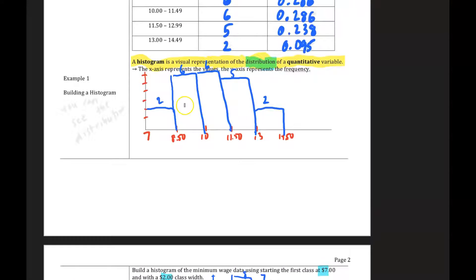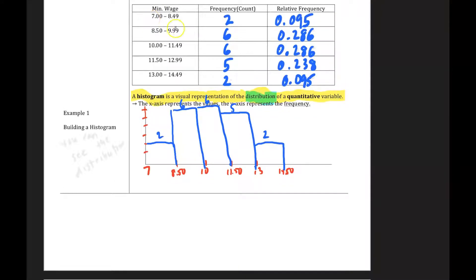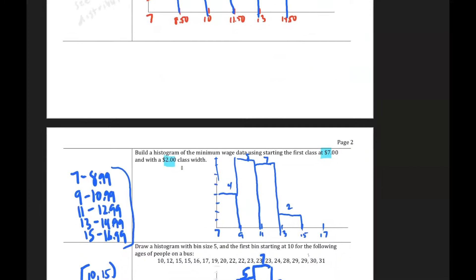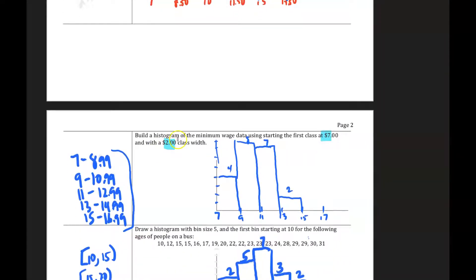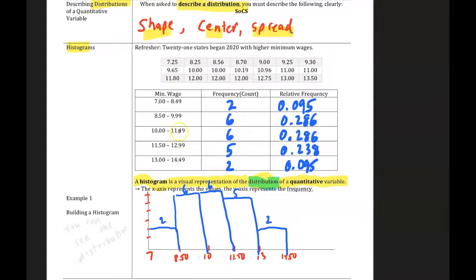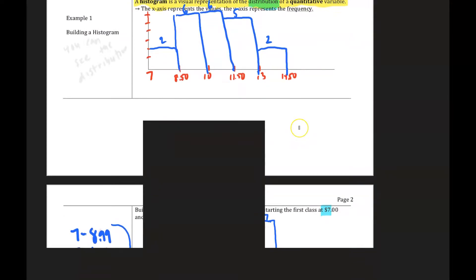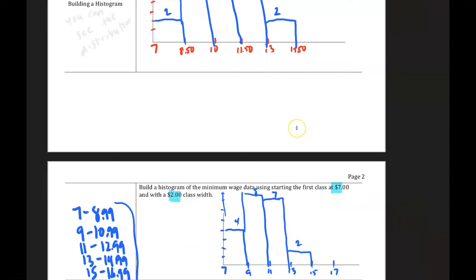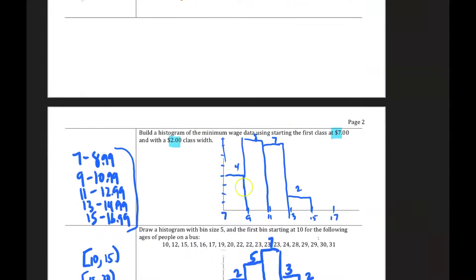Now, here was a histogram with a class from 7 to 8.49, $1.50, the class width. Here's another one, the same data with a class width of $2 instead of $1.50, which we have here in this class width. And so the data is going to look similar, but the distribution may appear slightly different just because we changed the class width.